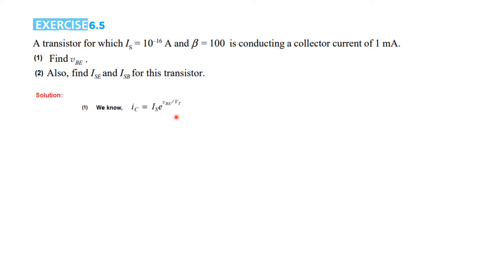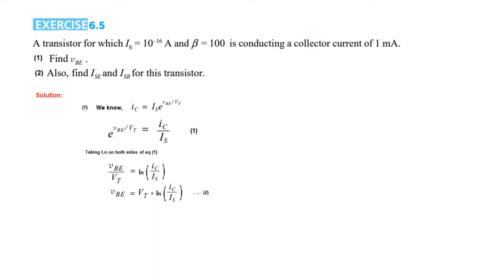We start with the diode equation. As we have done before, we switch sides so e raised to VBE over VT equals IC over IS, and we take the natural log on both sides. We get VBE over VT on the left side, and natural log of IC over IS on the right side. The exponential and log cancel each other, and from here VBE equals VT times natural log of IC over IS.